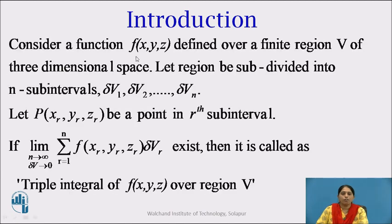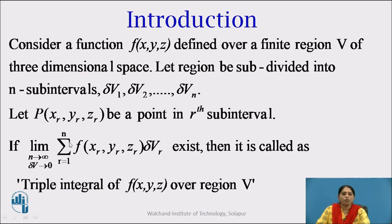Consider a function f(x, y, z) defined over a finite region v of three-dimensional space. Let the region be subdivided into n subintervals delta v1, delta v2 up to delta vn. Let the point P with coordinates xr, yr, zr be a point in the rth subinterval. If the limit as n tends to infinity and delta v tends to 0 of the summation r equal to 1 to n of f(xr, yr, zr) times delta vr exists, then it is called the triple integral of f(x, y, z) over the region v.